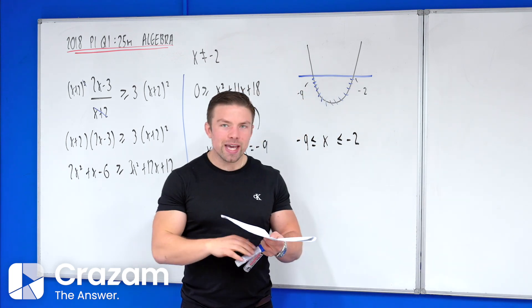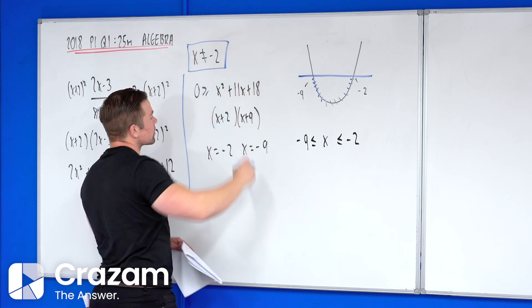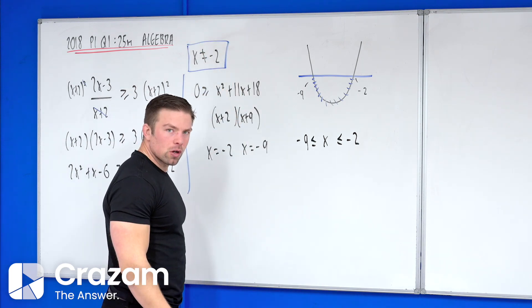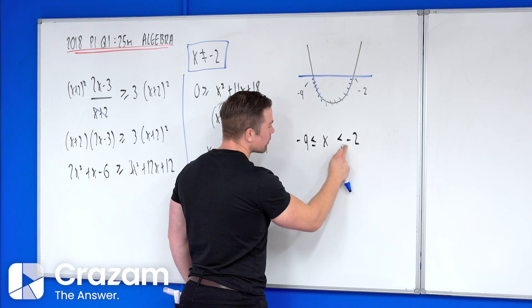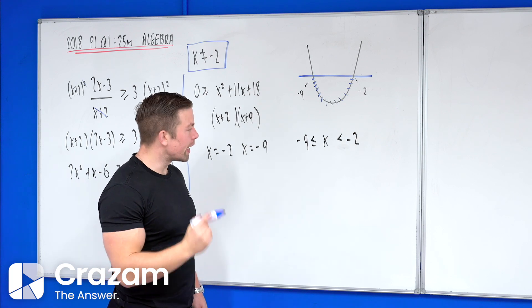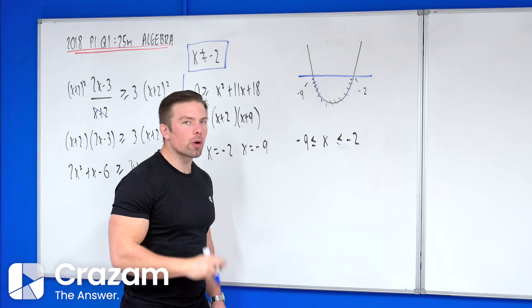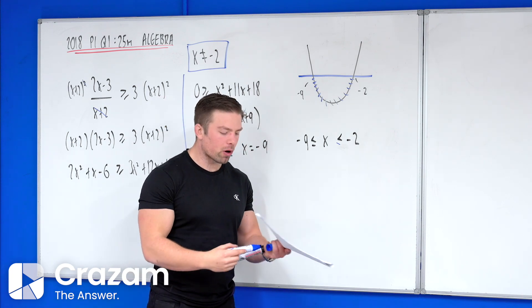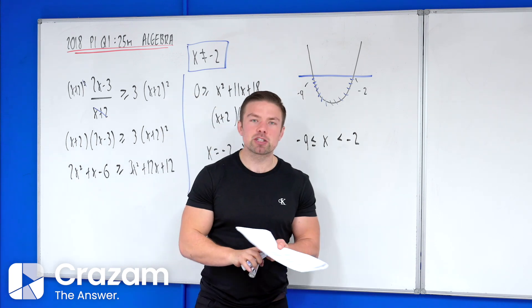Now what I would say is at the start of the question they did distinctly tell us that x is not equal to minus 2, so you usually in a maths question would have to get rid of that to get full marks. However, in this year they accepted this even though technically it's wrong, but I would always just to be sure that I get full marks I would always just rub that out.